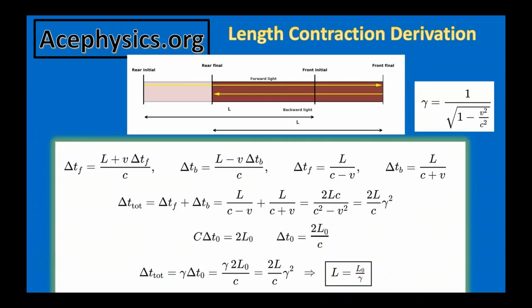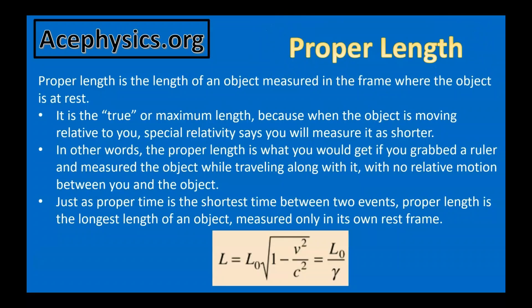Proper length is the length of an object measured in the frame where the object is at rest — it is the true or maximum length. When the object is moving relative to you, special relativity says you will measure it as shorter. Proper length is what you would get if you grabbed a ruler and measured the object while traveling along with it. Just as proper time is the shortest time between two events, proper length is the longest length of an object, measured only in its rest frame. The length of an object in motion equals its proper length multiplied by √(1 − v²/c²), or equivalently L = L₀/γ.